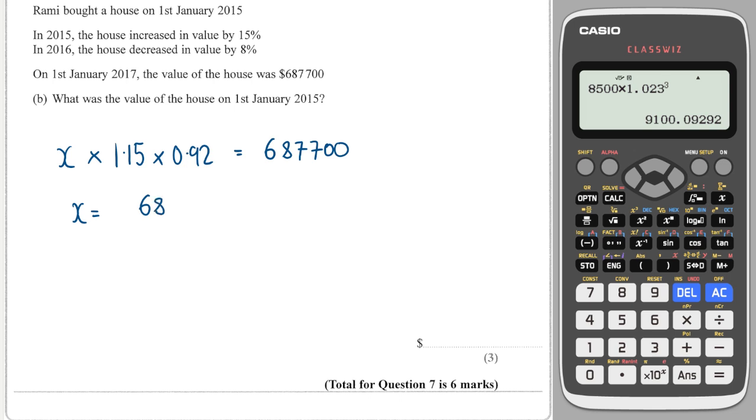I would write that it's 687,700 divided by 0.92 and then divided by 1.15. So on our calculator: 687,700 divided by 0.92, that will go back one year, and then divided by 1.15. Perfect number! That is $600,000.